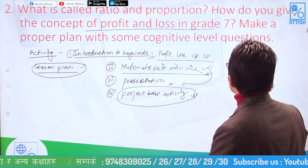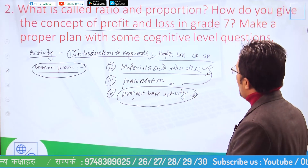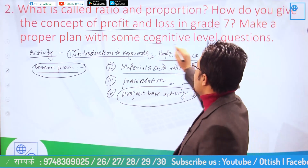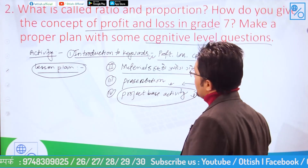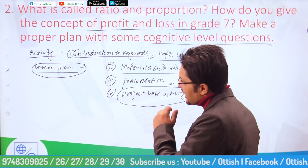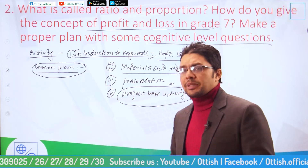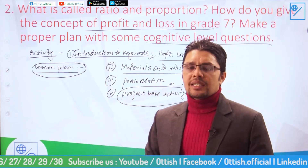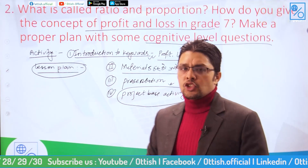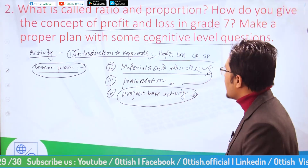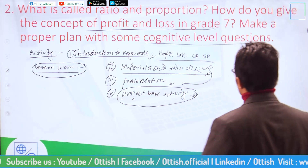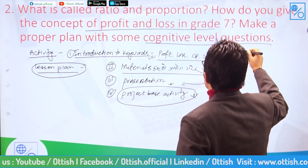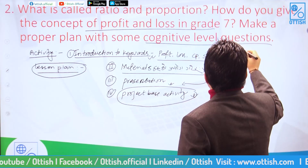Now, in the learning plan, what do we need to do? Cognitive level. Normally there are three levels according to Bloom's Taxonomy: cognitive level.